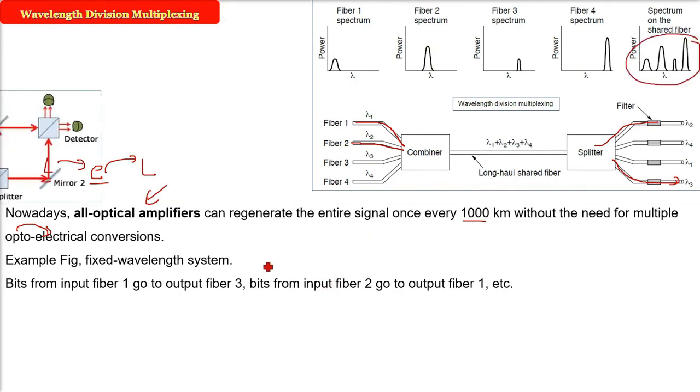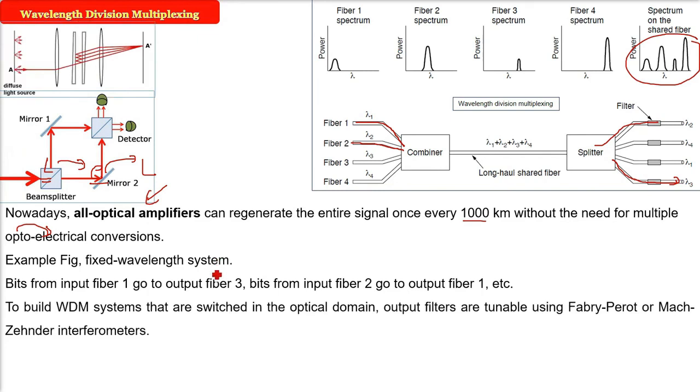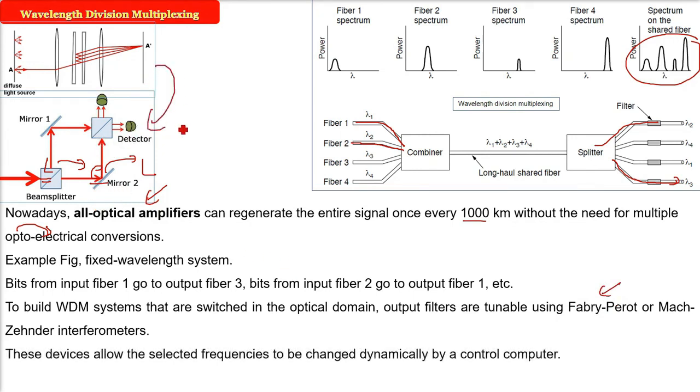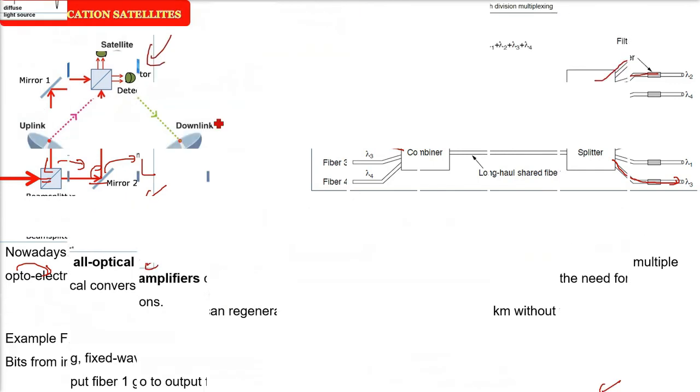Now, there has to have some, you know, wavelength, the wavelength tuning has to be done. So, in order to bind the WDM, wavelength division multiplexing that are switched in the optical domain, output filters are tunable using the Fabry-Perot and Mach-Zehnder interferometer. These devices, they allow selected frequencies to be changed dynamically just by a control computer. So, many different wavelengths pass through the telephone network from a fixed set of fibers thanks to WDM wavelength division multiplexing.